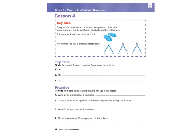We are going to find a factor pair for each number without using the number one as a factor. For the number 10, I know that five and two are factors — five times two. For the number 18, two times nine equals 18, and three times six equals 18. For the number 25, five times five equals 25.